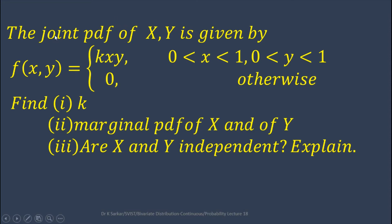Here is a question. The joint PDF of (x, y) is given by f(x, y) = k·x·y for 0 < x < 1, 0 < y < 1, and f(x, y) = 0 otherwise. Question 1: find k. Question 2: find the marginal PDF of x and of y. Question 3: are x and y independent? Explain.